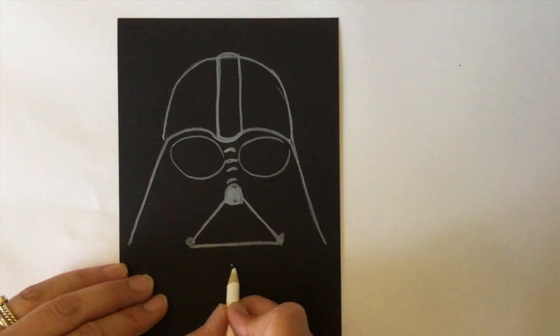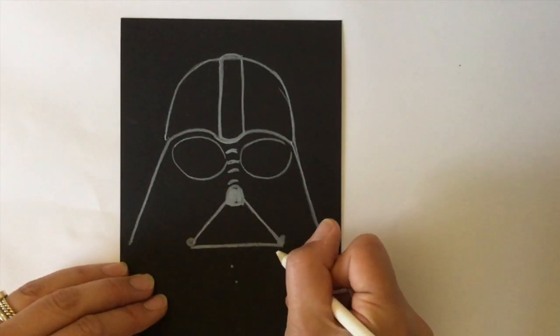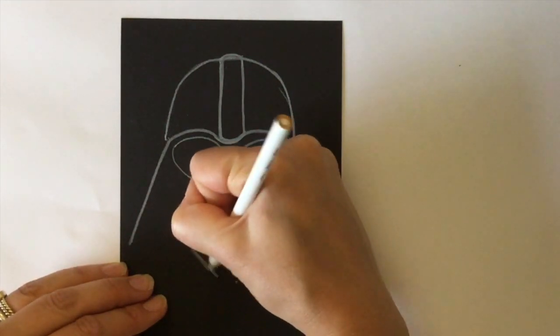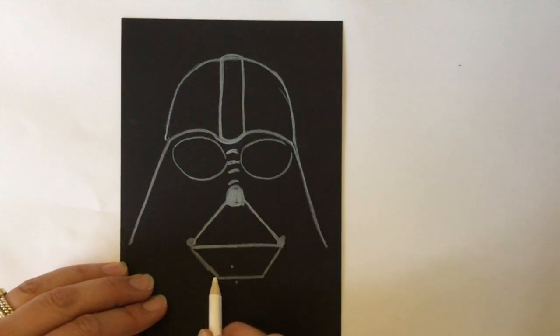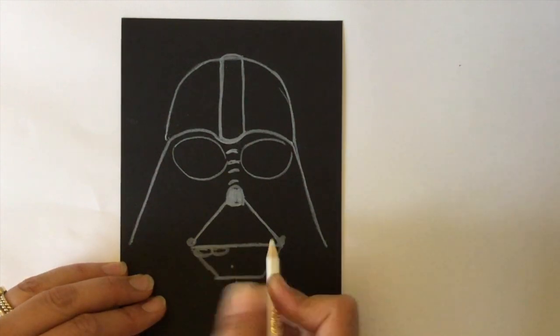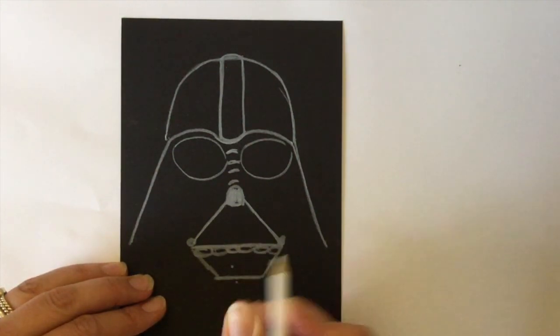Now draw his chin. Continue the lines down from the circles, and draw a straight line across. He has this texture on his chin, so I indicate that simply by drawing a lot of ovals quickly and next to each other.